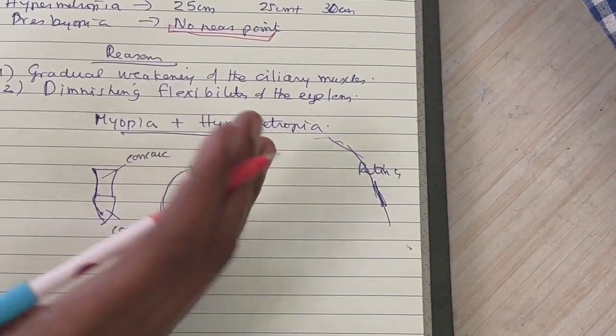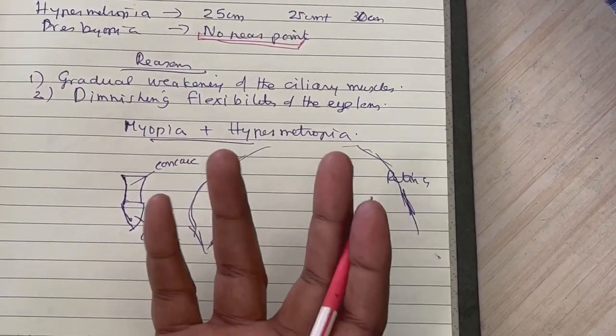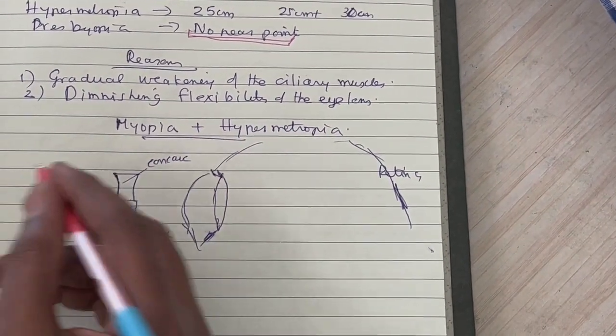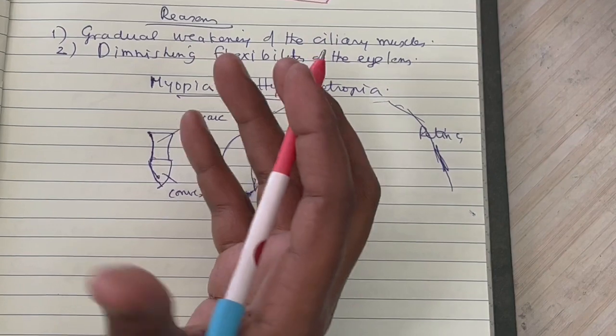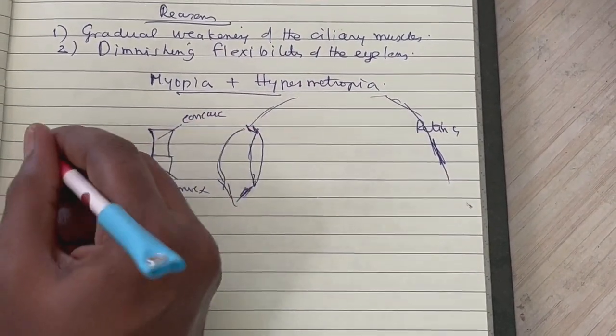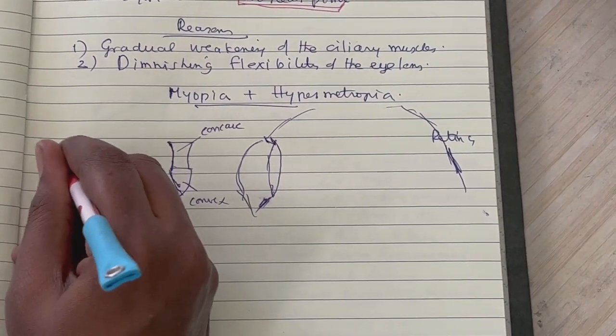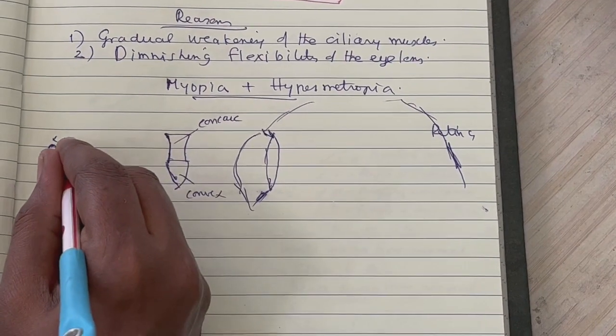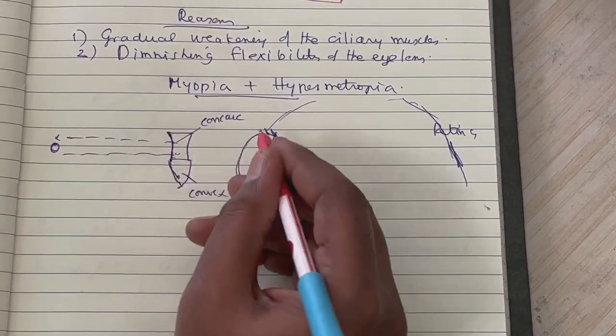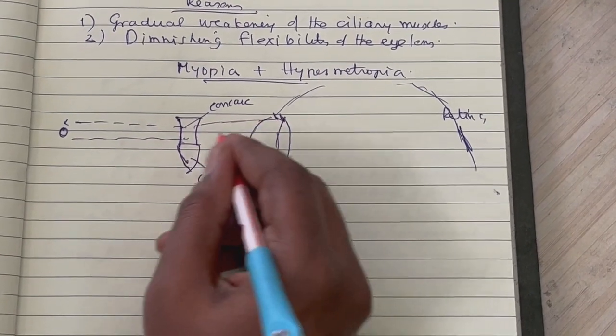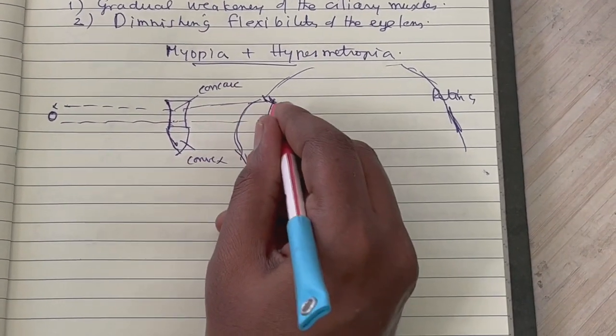Now what happens? This person can't see distant objects as well as near objects. For cases of the disability to see distant objects, suppose an object is at infinity. For rays coming from there, we are using a concave lens.